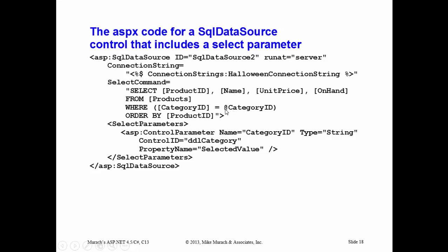Here's an example where we've connected a parameter. In SQL Server, you always know what the parameter is because it's preceded by an at sign — that's my parameter. A convention is to name the parameter the same as the column it's mapped to, but you don't have to. Down here we define the parameters: the control parameter name needs to match the parameter in the SQL, but the control ID doesn't. For a drop-down list, the value is typically the selected value.